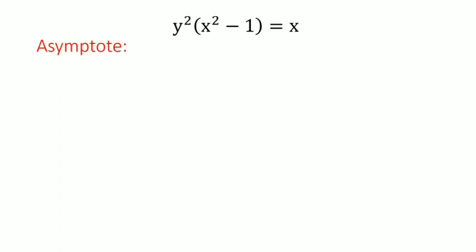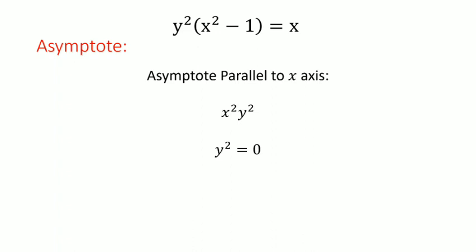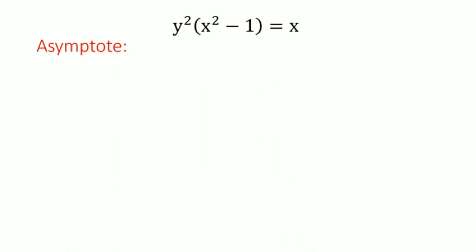Next, we will find asymptotes. First, we'll find asymptotes parallel to the x-axis. To find asymptotes parallel to the x-axis, we get the highest degree term in x, which is x²y². We equate the coefficient of the highest degree term in x with 0, that is y² = 0, giving y = 0. So the x-axis itself is an asymptote.